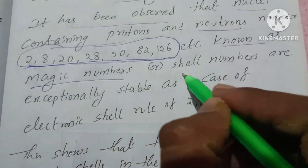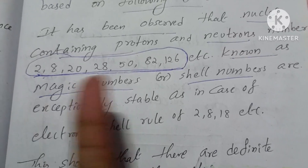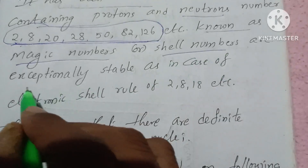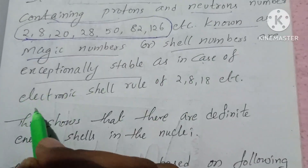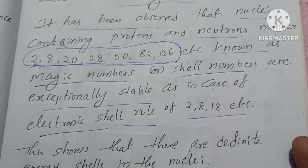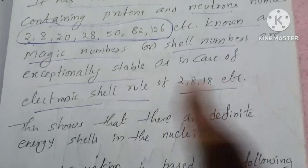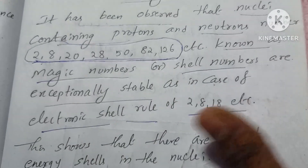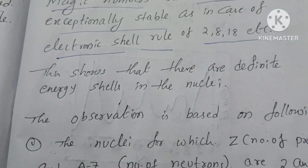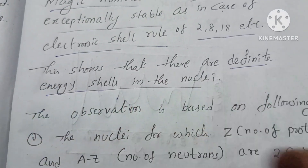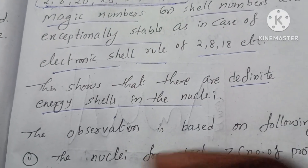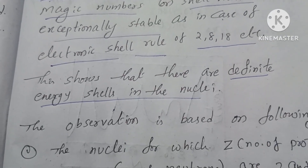These special numbers are called magic numbers — not just shell numbers. Just as inert gases are stable due to the electronic shell rule (2, 8, 18, etc.), in the nucleus there are definite energy shells, giving rise to magic numbers.